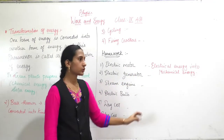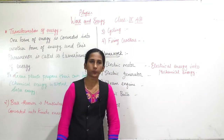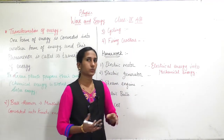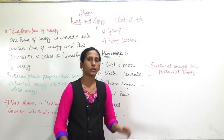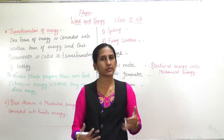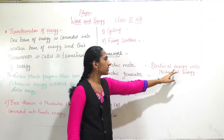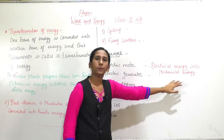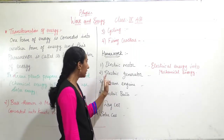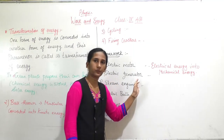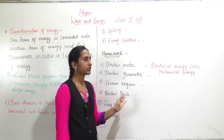One example I have solved for you: the electric motor. An electric motor works on electricity, so electrical energy is the input. When you supply electricity to the motor, it starts working mechanically, so electrical energy is converted into mechanical energy. The remaining examples — electric generator, steam engine, electric bulb, dry cell, and solar cell — you will solve and send to me.